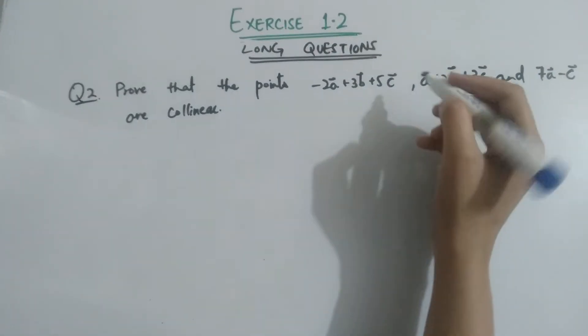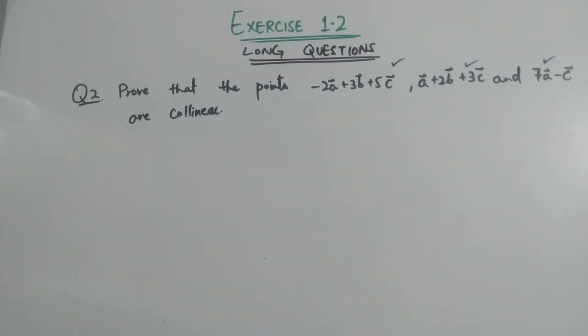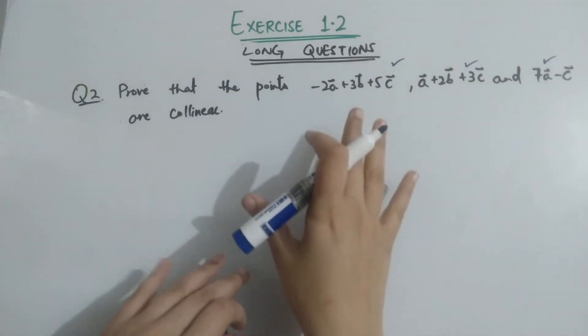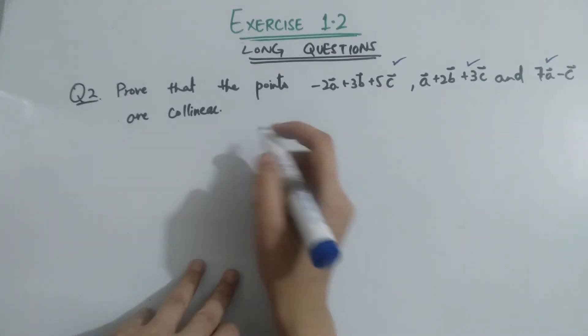For three vectors, in the previous Exercise 1.2 we showed that two vectors are collinear if they are scalar multiples of each other. Now for three vectors, if we prove the determinant of the three vectors equals zero, then the vectors will be collinear.